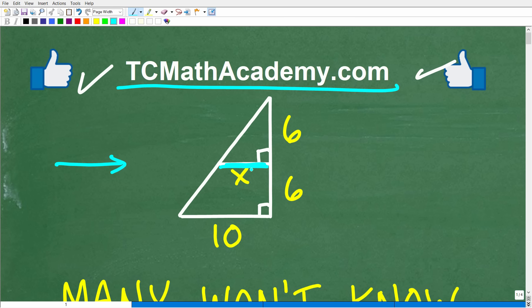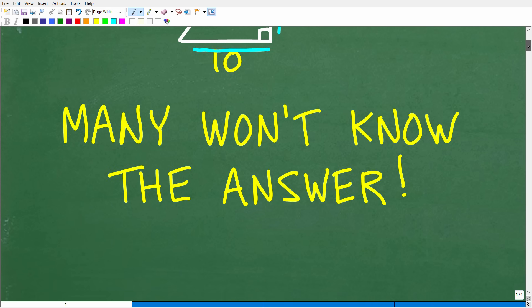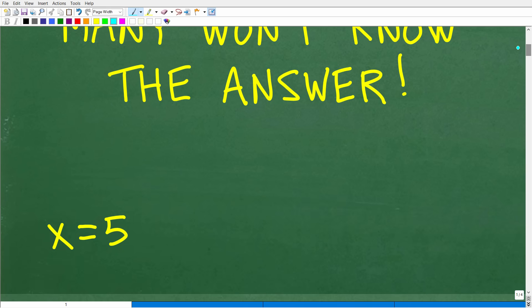Okay, so just to make sure there's no confusion here, we're looking for this length, length x. This length right here is 6, this is 6, this is 10. Of course we have some right triangles going on here. What is the answer? Well, the correct answer, x is equal to 5.